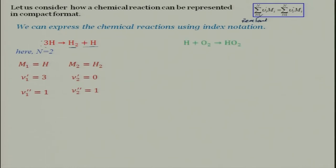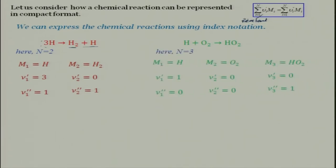Let us take another example where N = 3: H + O2 → HO2. Writing in compact format: M1 = H, M2 = O2, M3 = HO2. Now, nu_1' for H on the reactant side — is that right or wrong? It is not right. Nu_2' for O2 would be 1. The rest of the assignments need to be checked carefully.